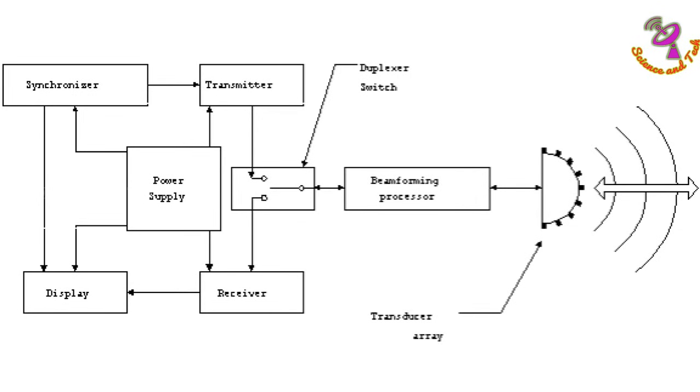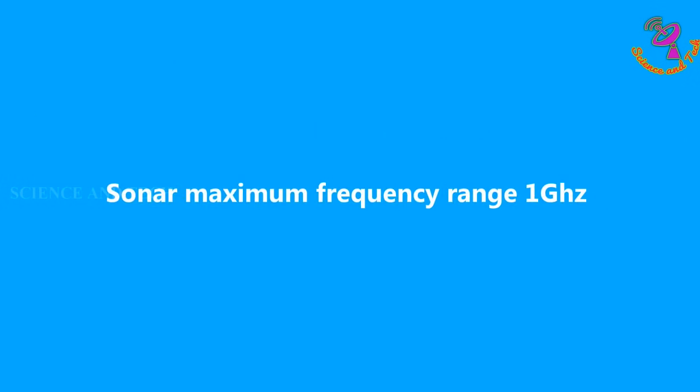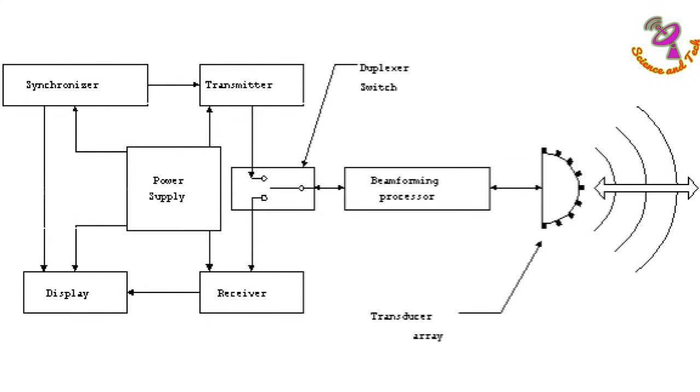The sound wave is measured in frequency. The maximum frequency range of sonar is 1 gigahertz. The sound source comes from an electrical generator, which converts electricity to acoustical noise.